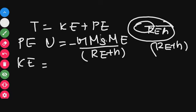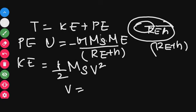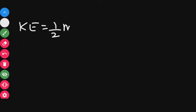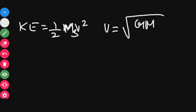Kinetic energy is nothing but it is equal to half of m, the mass of the satellite, into velocity squared. The orbital speed v is equal to the square root of GMe divided by Re plus h. So kinetic energy is half into m into the orbital speed squared, which gives GMe divided by Re plus h.